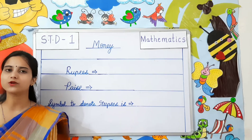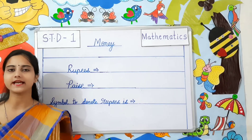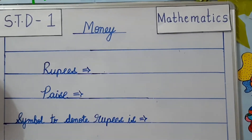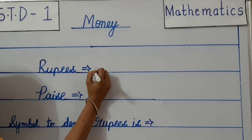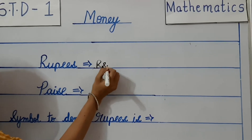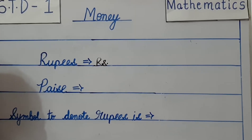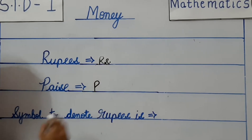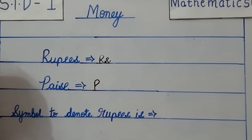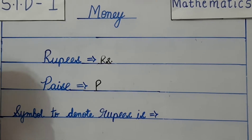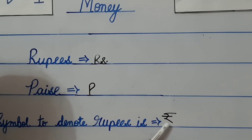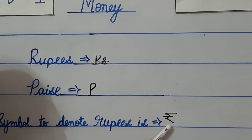Now let us learn how to write rupees and paise in short form. Rupees is written as Rs. — that is the short form for rupees. For paise we write P — that is the short form for paise. The symbol to denote rupees is the rupee sign, denoted like this.